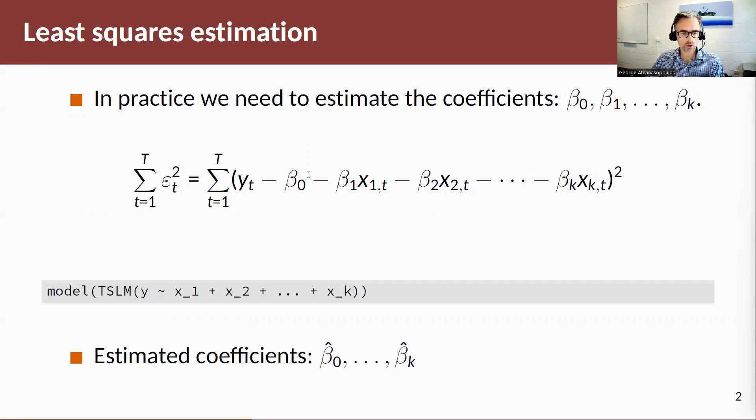For the purpose of our section here, we're going to use the tslm function to estimate our model. So y is our response variable, x1 to xk are our k predictors, and this tslm function is within the forecast package and will return a set of estimated coefficients.